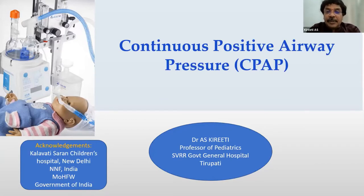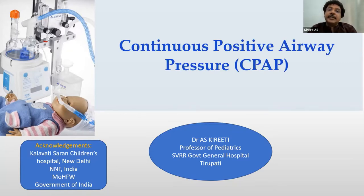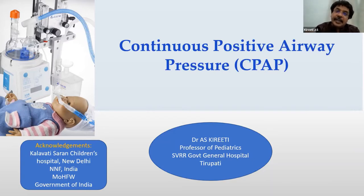So, what is continuous positive airway pressure? How are we breathing? By inhalation, what will happen? The diaphragm will contract and move down. So, then negative pressure is initiated in the lungs, and the air from the environment is sucked into the lungs — that is negative airway pressure. Here, we are giving positive airway pressure because forcibly we are sending the air into the lungs. That is why it is called continuous positive airway pressure.